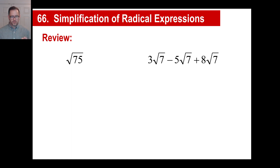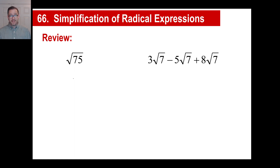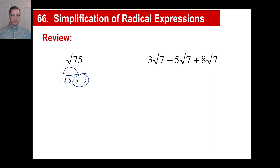Let's look at some oldies first — just some review. You should be familiar with these. Remember how to do the square root of 75? You bust this up into pieces, and if you ever get stuck you just make a factor tree. You'll end up with these prime factors: 3 times 5 times 5. If you see 2 of any one, you can pull that outside, so your answer is 5 times the square root of 3.